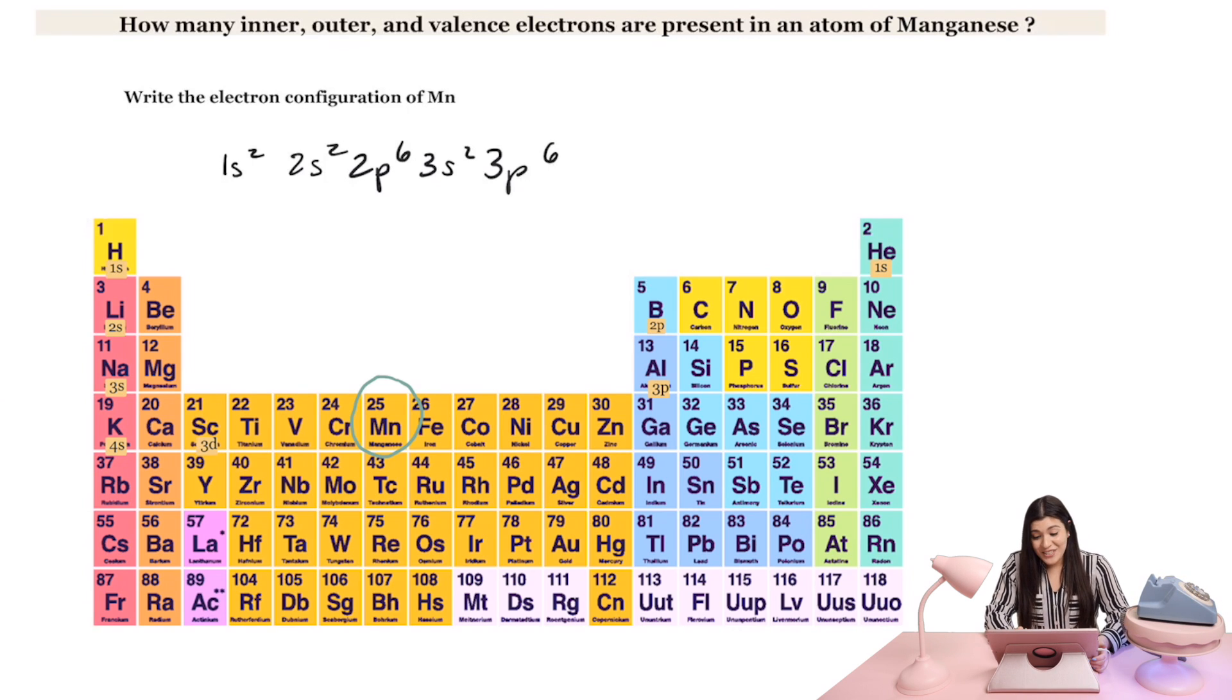We're going to keep going. So we're almost there. So now I'm going to keep going all the way to the fourth row. We're in the fourth row. This is now 4S, 1 and 2. So this is 4S2.